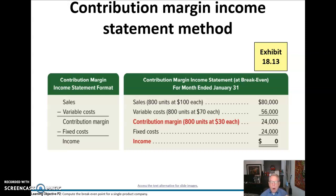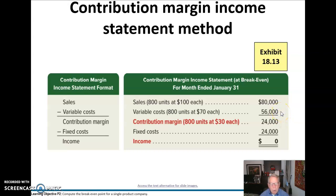What does the contribution margin income statement look like at the break-even point? We take our sales, subtract our variable costs, get our contribution margin, and then subtract our fixed costs to get pre-tax income. Applying this to our example: $80,000 in sales, minus 800 units at $70 each ($56,000 variable costs), gives a contribution margin of $24,000. Our fixed costs were $24,000, so when we subtract that from the contribution margin we get zero income.